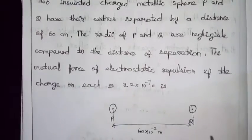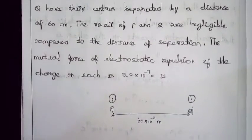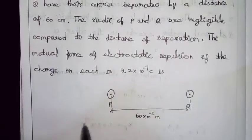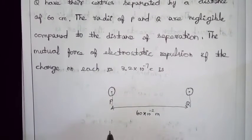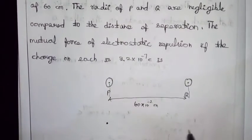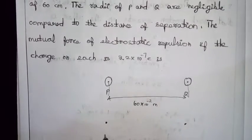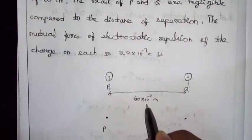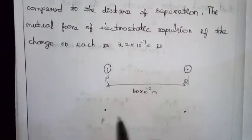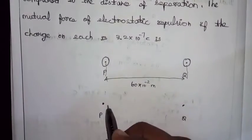The radius of P and Q are negligible, the radius of P and Q are very small, that's why we are treating them as point charges.